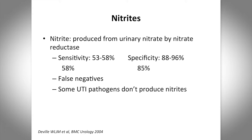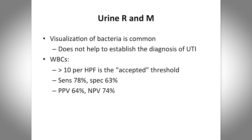Nitrites are produced by certain organisms as byproducts of metabolism — converting nitrate to nitrites. Some pathogens don't produce nitrites. Common ones like E. coli, Klebsiella, and Proteus will produce nitrites, but others like enterococcus, some coagulase-negative staph, and Pseudomonas will not. The sensitivity is 58 percent and specificity 85 percent in inpatient populations. So these are great tests if they're negative; if they're positive, they don't really help you very much. False negatives are largely because of pathogens that don't produce nitrites.